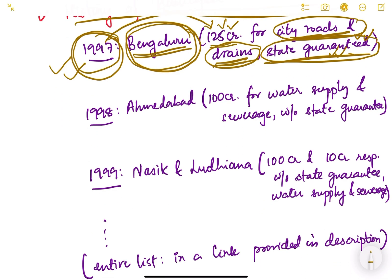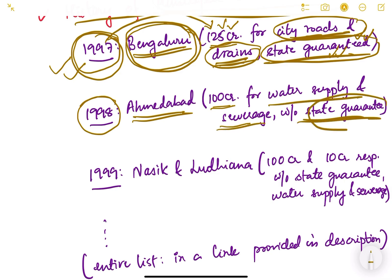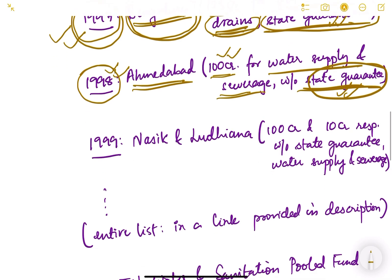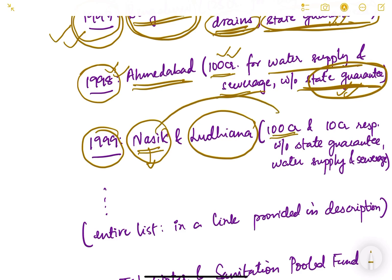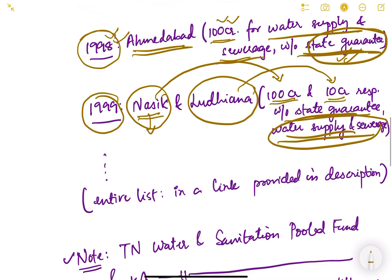After Bangalore, in 1998, Ahmedabad Municipal Corporation issued bonds of 100 crores for water supply and sewerage — and this was without a state guarantee. Then in 1999, Nasik Municipal Corporation in Maharashtra issued bonds of 100 crores, and Ludhiana in Punjab issued bonds of 10 crores. Both were also without state guarantee and were again for water supply and sewerage.